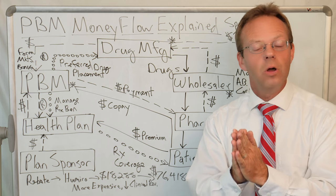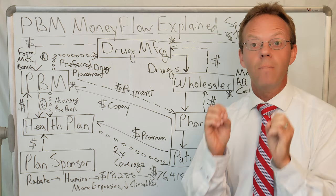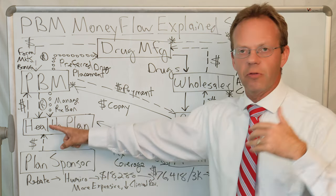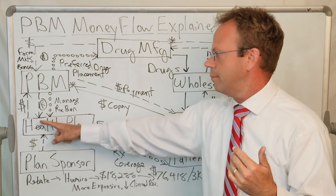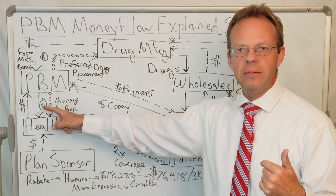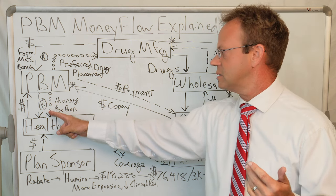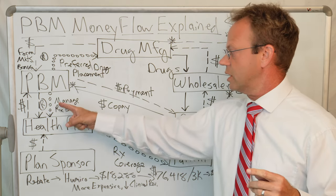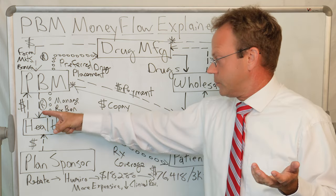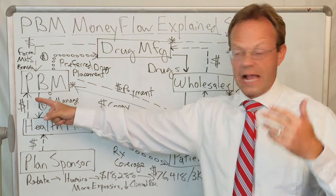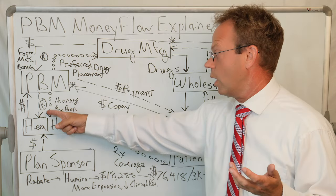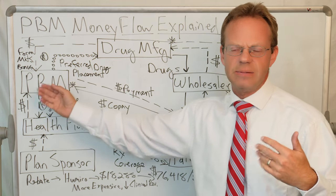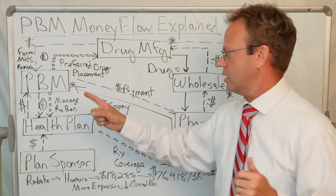Now is where it gets fun because there are a lot more arrows. The plan sponsor pays the health plan — we already went through that. The plan sponsor also pays the PBM, but they actually get money back from the PBM as well because they get part of the rebates. They also receive a service — managing the prescription benefits. So they pay the health plan not only for the actual cost of medication going to the pharmacy, but also an admin fee. And in return, they get some of the rebates back.